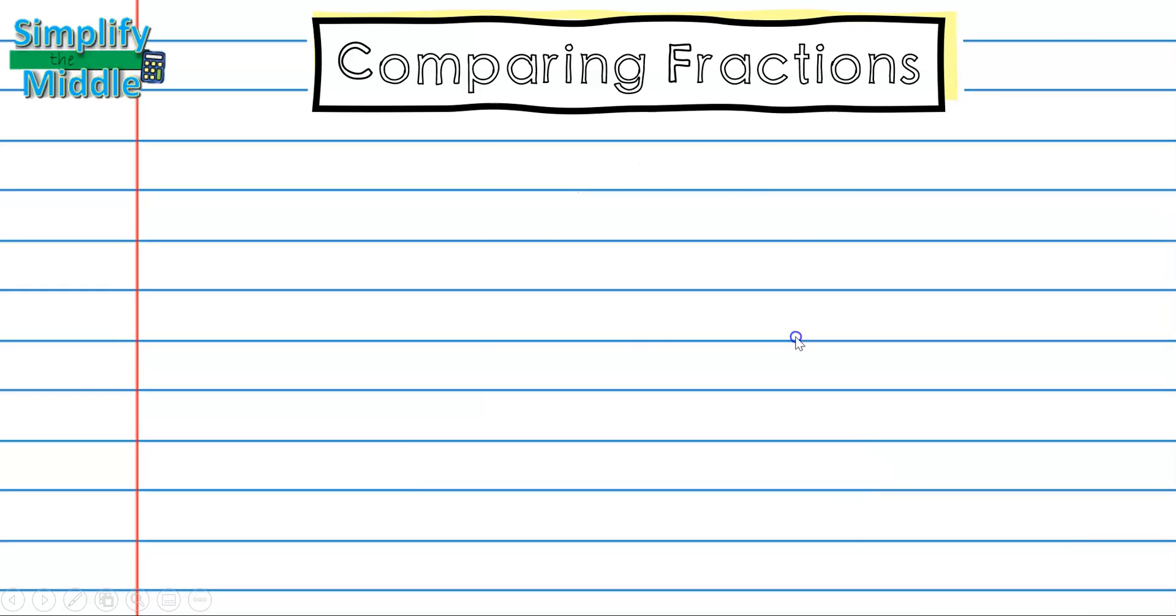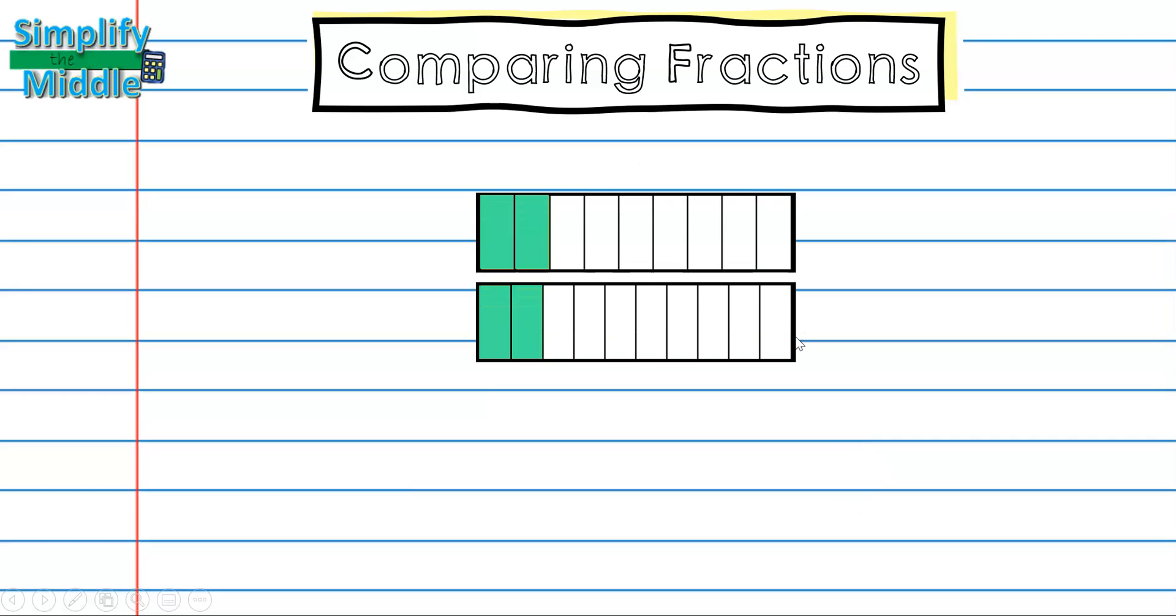Now that we've reviewed our comparison symbols, let's look at a couple of fractions. In these pictures I see on the top, I have two sections shaded out of a total of 9 sections, so this represents 2 ninths. On this fraction, I have 2 shaded as well, but if I look at the number of sections it's been cut into, it's 10, so this is 2 tenths.